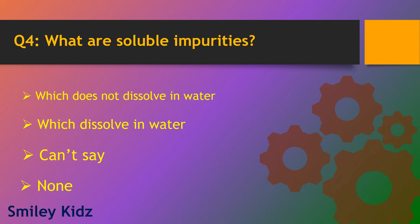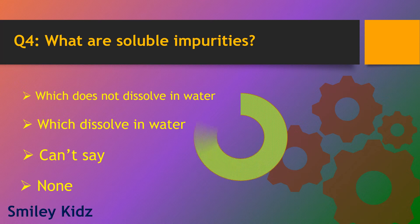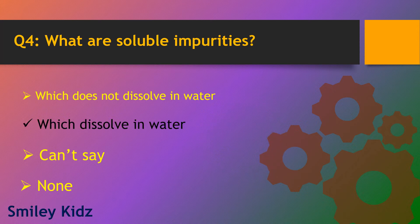Question number 4. What are soluble impurities? Options are: which does not dissolve in water, which dissolve in water, can't say and none. The right answer is which dissolve in water.